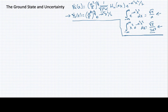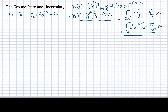This means that we're going to be interested in the variance of both the position and the momentum. Remember that that variance, for example in the case of the position, would be the average value of x squared minus the average value of x, quantity squared, and similar for the momentum. So these are the sorts of things we need to calculate for this ground state wave function.